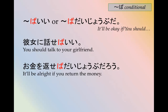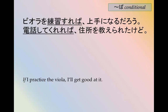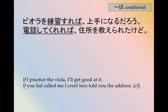But ば is much more widely used. It doesn't restrict what comes after to いい, よかった, or だいじょぶだろう. For example, 彼女を練習すれば上手になるだろう — if I practice the viola, I'll get good at it. 電話してくれれば住所を教えられたけど — if you had called me, I could have told you the address. This is counterfactual — you didn't call, but if you had, I would have told you. It can end in けど, だろう, or かもしれない for counterfactual meaning.